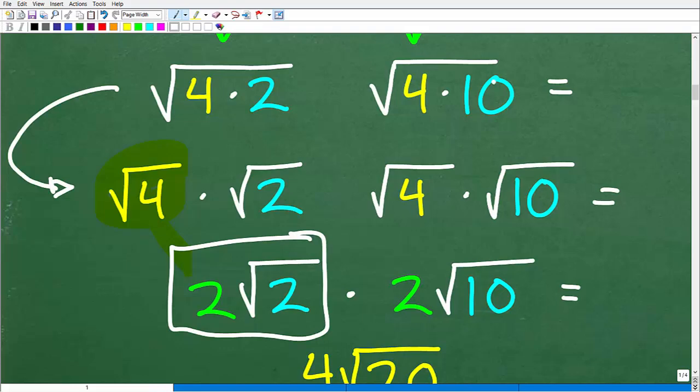Again, we're going to break up this big square root into two small square roots. And here I have my lovely perfect square factor. Square root of 4 is 2. So this is going to be 2 square root of 10.